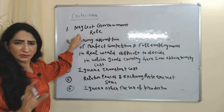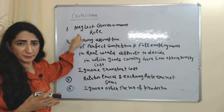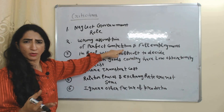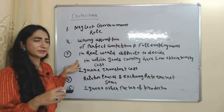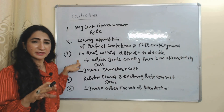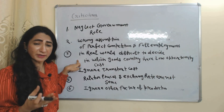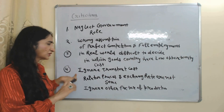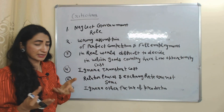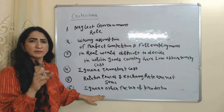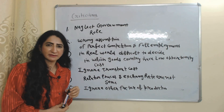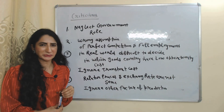Now we will see the criticisms of this theory. This theory ignores the role of government, which plays a very important role in international trade. It takes the wrong assumption of perfect competition and full employment. According to this theory, a country should increase production and export of goods where they have lower opportunity cost, but in real life there are so many goods that it is very difficult to decide. It also ignores transport cost, assumes relative prices and exchange rates are the same, and ignores other factors of production beyond labor. So this is all about comparative advantage theory — thank you so much for watching this video.